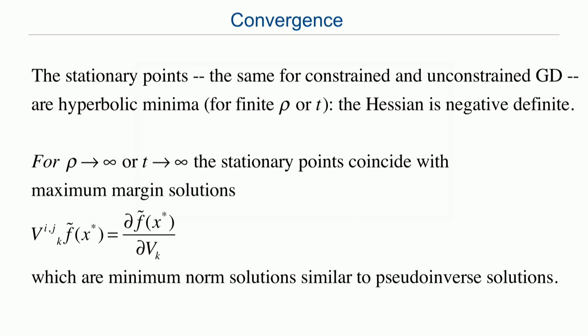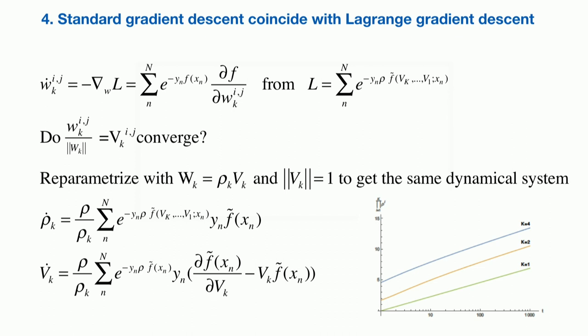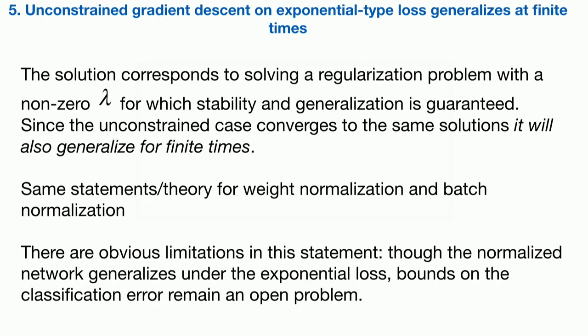So, by the way, when you have hyperbolic minima, you can also linearize a non-linear system. There are a lot of things you can do. If you have not an hyperbolic minima, you have to be very careful. And as I said, the main point is that the standard gradient descent, no regularization term, no Lagrange multiplier, converges to the same equilibrium point as the dynamical system in which you have the Lagrange multiplier, the regularization term. That's the one which allows us to say that the solution must generalize at finite time, at finite rho.